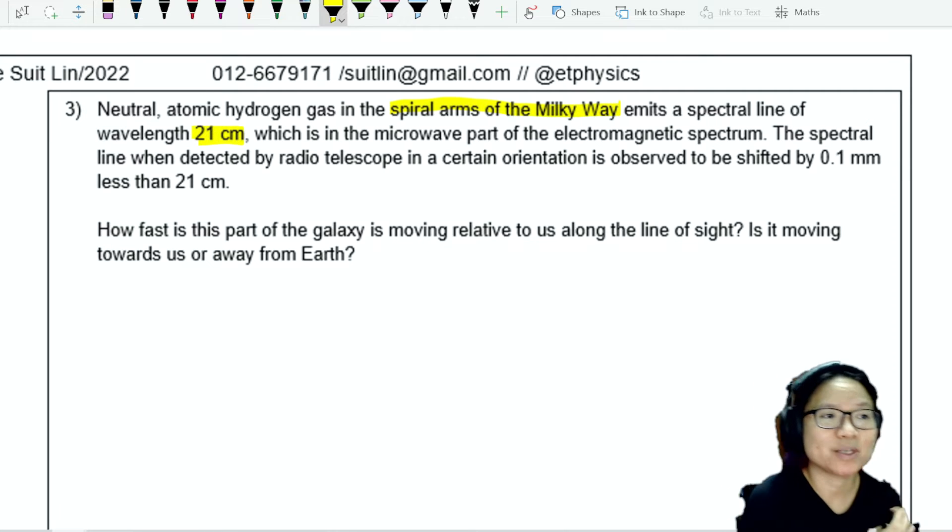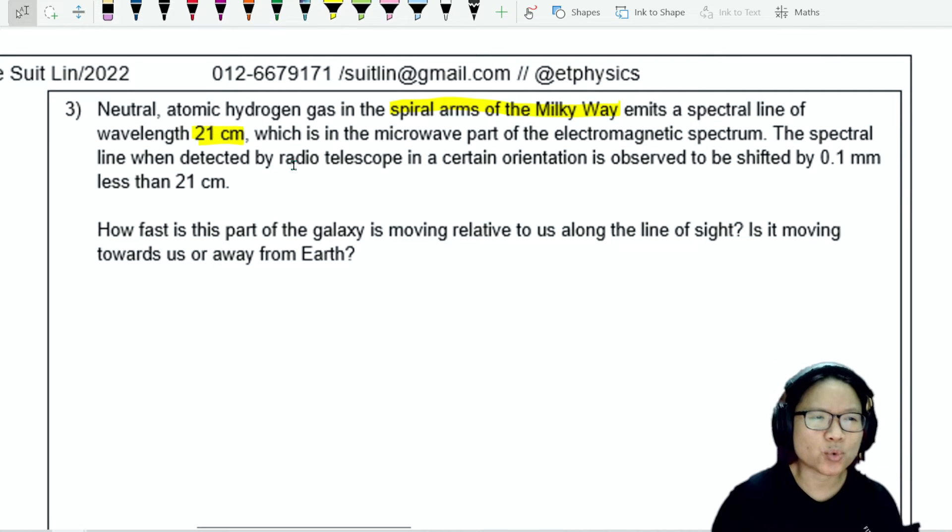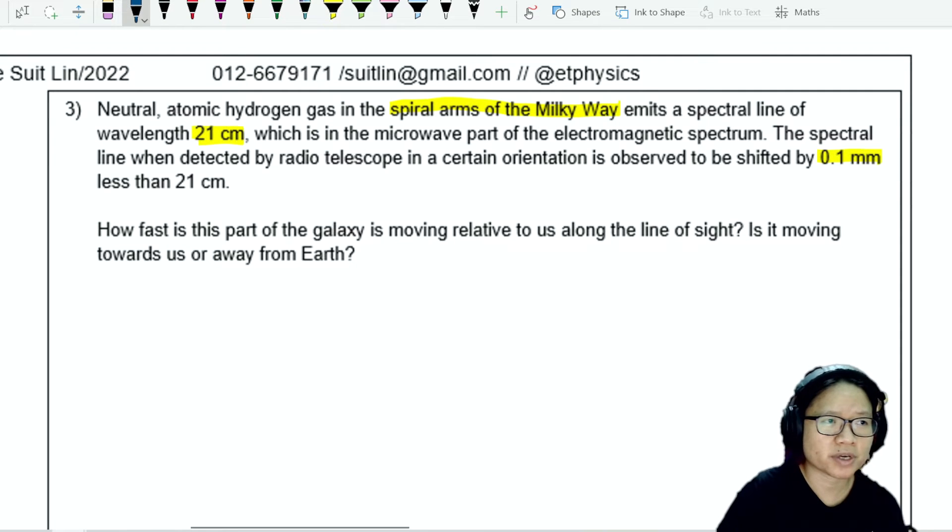The spectral line, when detected by radio telescope in a certain orientation, is observed to be shifted by 0.1 mm. So we have lambda, we have delta lambda, and it is shifted 0.1 mm less than 21 cm.